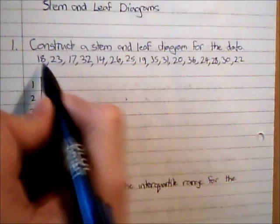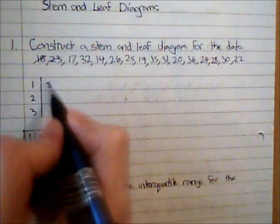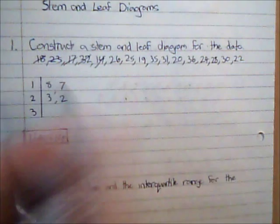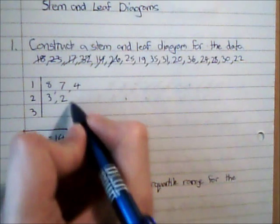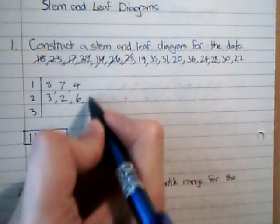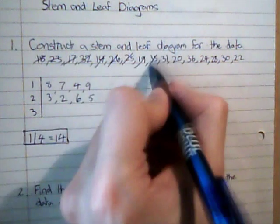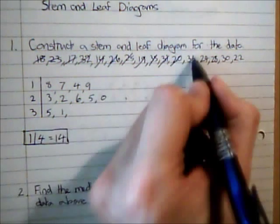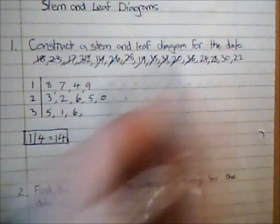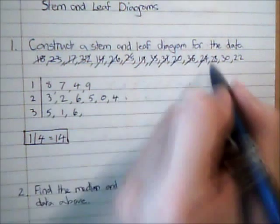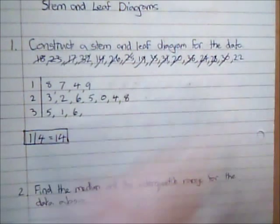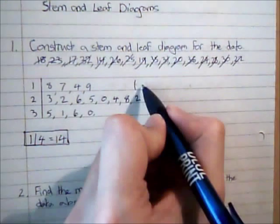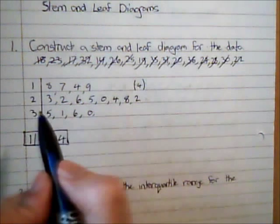So I'm just going to go through and do this in order. And for the moment I'm not going to worry about the order the data is in. And I'm just going to put in brackets at the end here how many bits of data are in each group because it's going to make my life a bit easier.